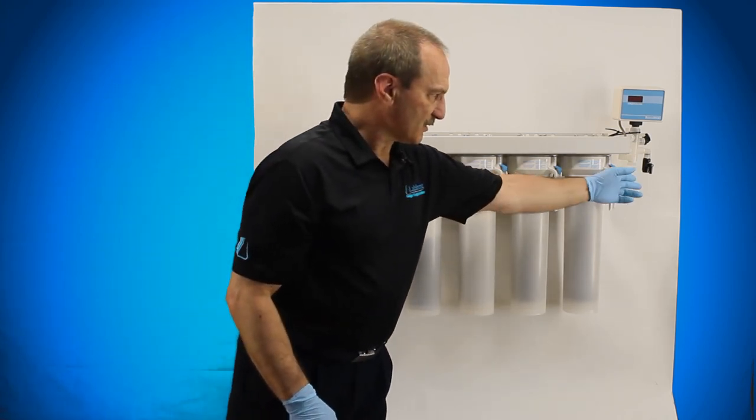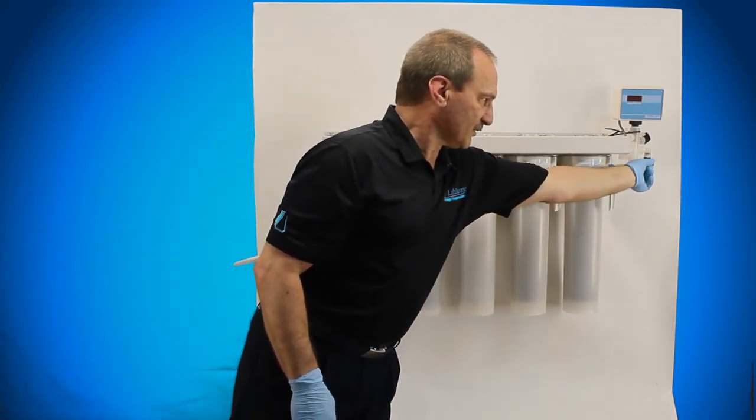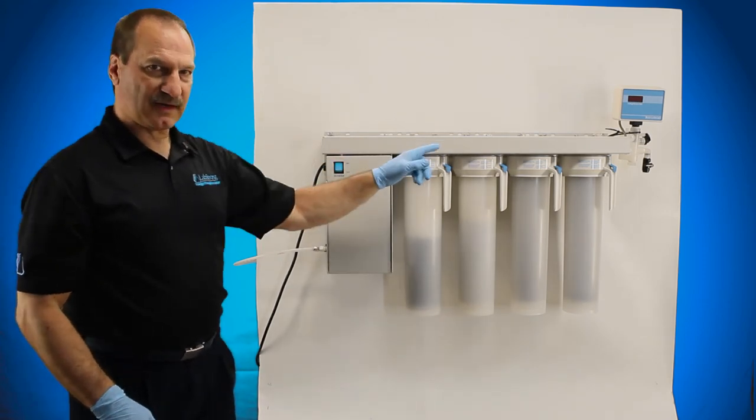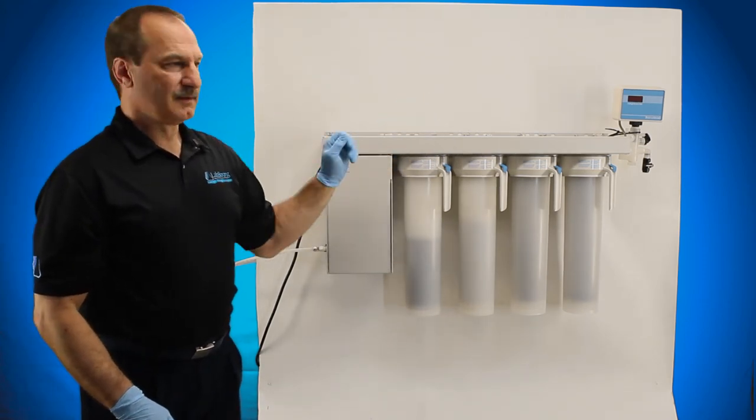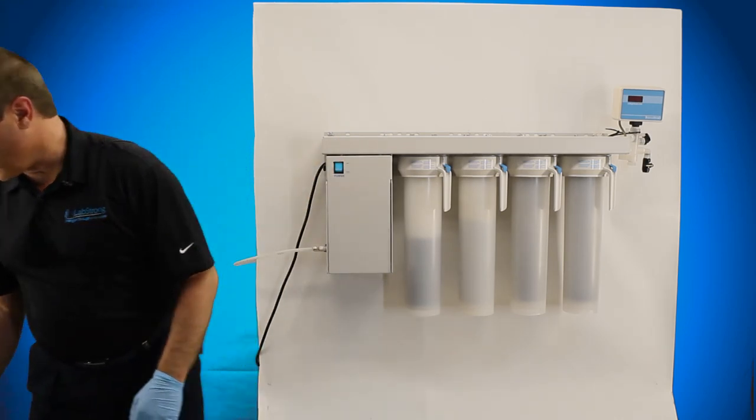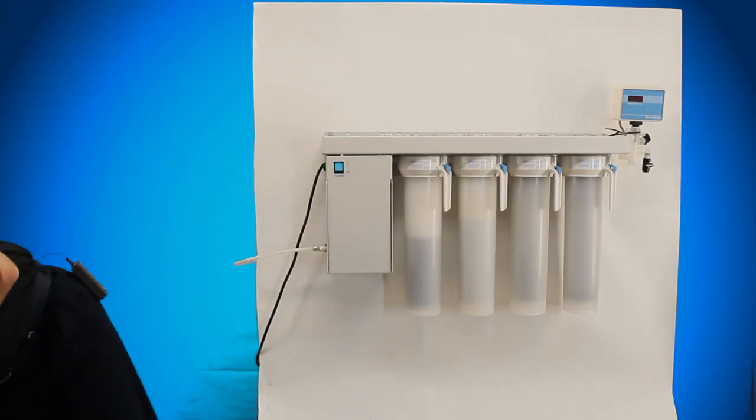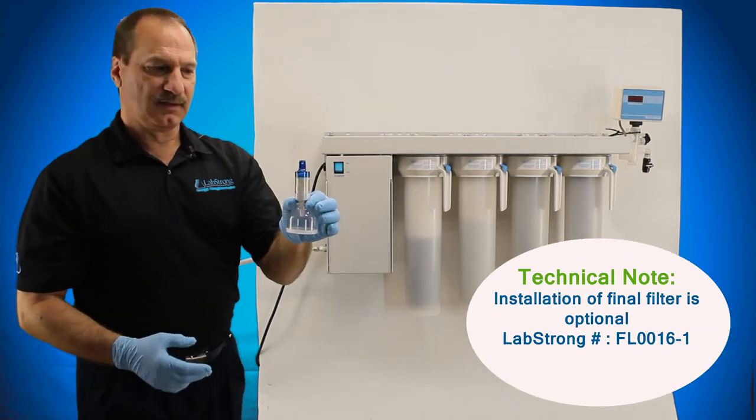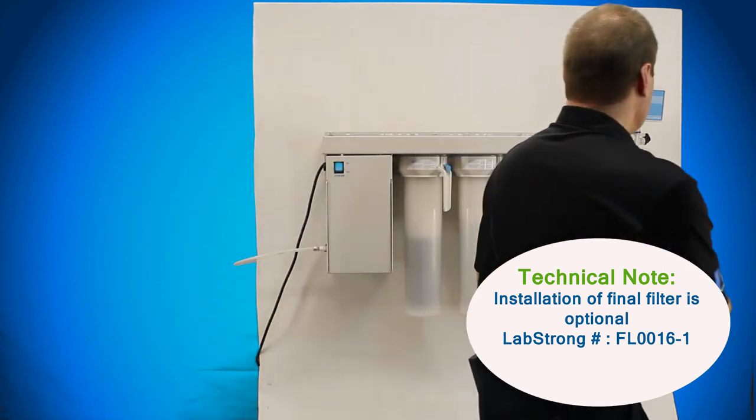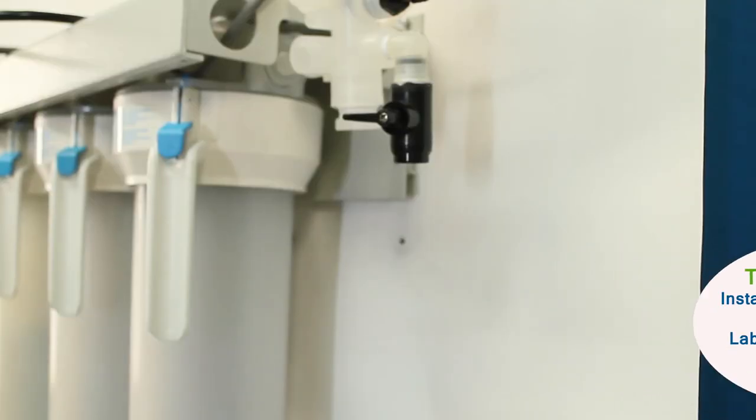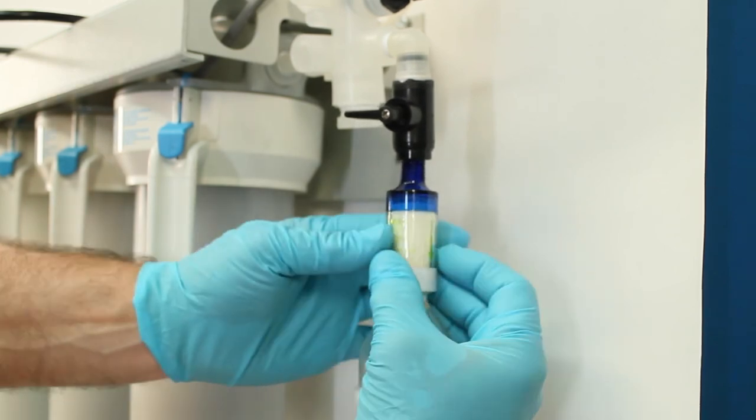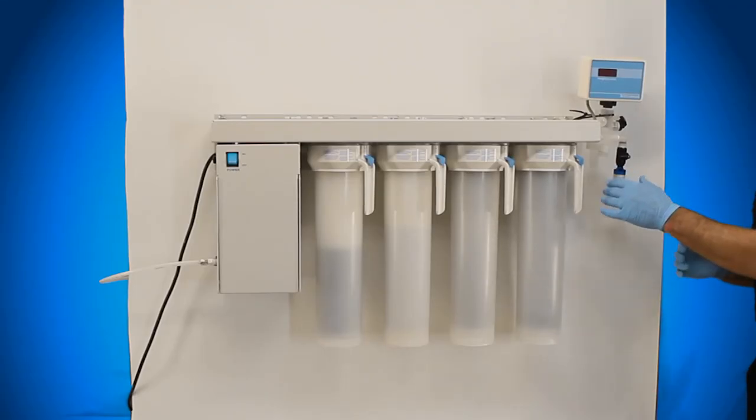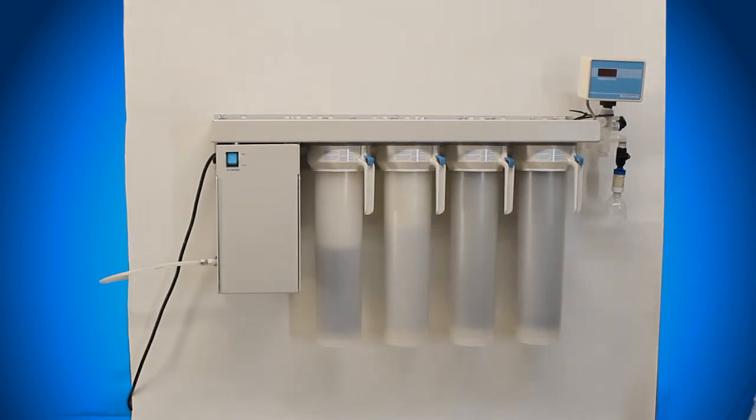Once all the air is out of the system, you can shut the valve off, and that system will go into recirculation, and your purity will start to drive itself up. At that point, when you've got to flush through, now you can go ahead and actually install your 0.2 micron final filter. This is an FL0016-1 that just threads in place. Once that's in place, you're ready to go and the system is ready to be used.